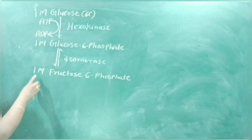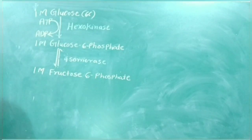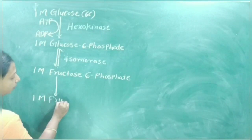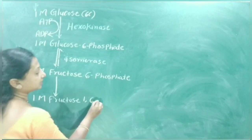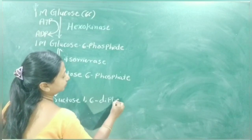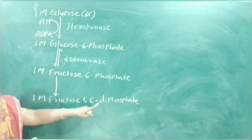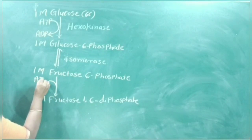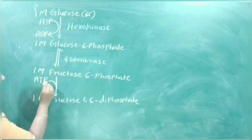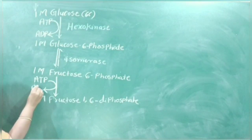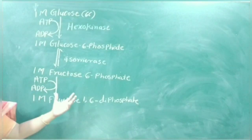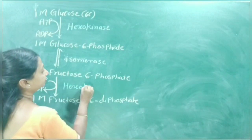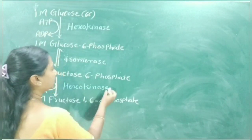Fructose-6-phosphate is converted into fructose-1,6-diphosphate. Here a phosphate is added at position 1, again coming from ATP, which is converted into ADP. The enzyme that helps this conversion is phosphofructokinase.